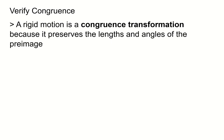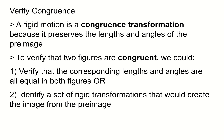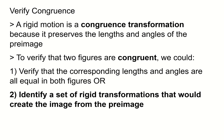Let's talk about verifying congruence. A rigid motion is a congruence transformation because it preserves the length and angle of the pre-image. To verify that two figures are congruent, there are a couple of things you could do. First, you can verify that the corresponding lengths and angles are the same in both figures. However, another way is to identify a set of rigid transformations that would create the image from the pre-image — a composition of transformations that takes the pre-image and converts it to the image. Because it's a rigid transformation, it preserves length and angle, therefore making the two figures congruent.